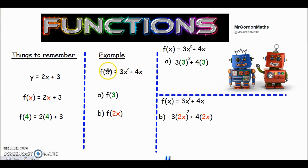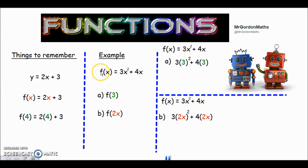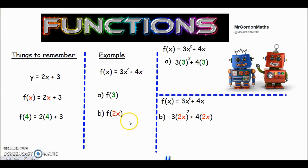Let's go through a slightly more complicated example. Our function has two x's in it — one here and one there. Part a asks us to work out the output if we put three in instead of x. Part b is an algebraic example — instead of putting a number in where x is, we're putting in a different algebraic expression. So rather than replacing x with a number as in part a, we're replacing x with more algebra.